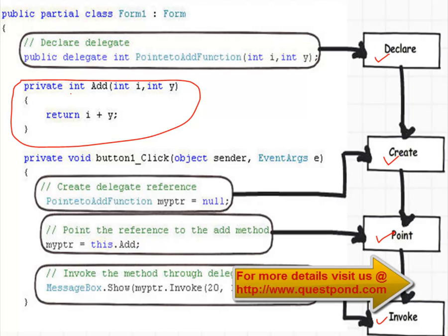The first step is we need to declare a delegate. We are going to point towards the add function which has an integer as a return type and two integer input parameters. We need to create a delegate by using the delegate keyword, with the return type as integer — it should be the same as the function we are pointing to — and give it a name like PointToAddFunction, along with the same data types as the input parameters. The second step is we create a reference to the delegate, called myptr.